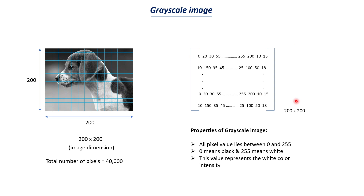So the grayscale image has now been converted to a matrix containing only numerical values. This is the data we will feed to our neural network. We are simply finding how many pixels there are and, for each pixel — each small box in our image — assigning the white color intensity, where 255 is the highest intensity (white) and 0 is the darkest (black). This is how images are processed.